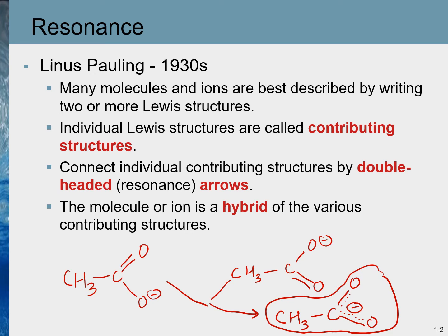In the composite structure, both C–O bonds are equal in size — larger than a double bond but smaller than a single bond, somewhere in the middle. You can consider them as a bond and a half. The individual structures are called contributing structures. They are also sometimes referred to as resonance structures or resonance contributors.